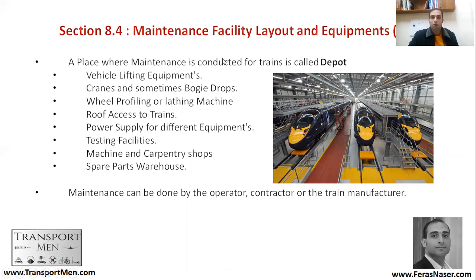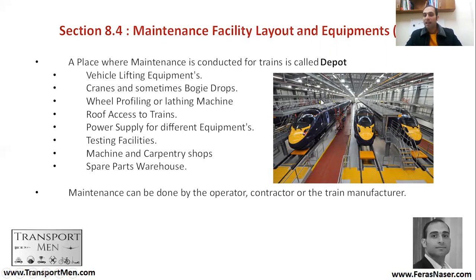The maintenance facility layout includes various equipment. Vehicle lifting equipment lifts the train so people can work underneath safely. Gantry cranes or bogie drops help detach the bogie from the train and fix it separately. Wheel profiling or lathing machines restore the wheel profile. Roof access equipment, such as stairs, allows workers to reach the top of the train. Power supply outlets support electrical devices throughout the facility.